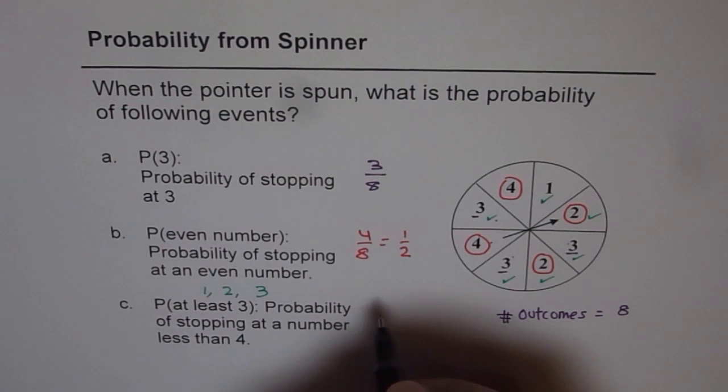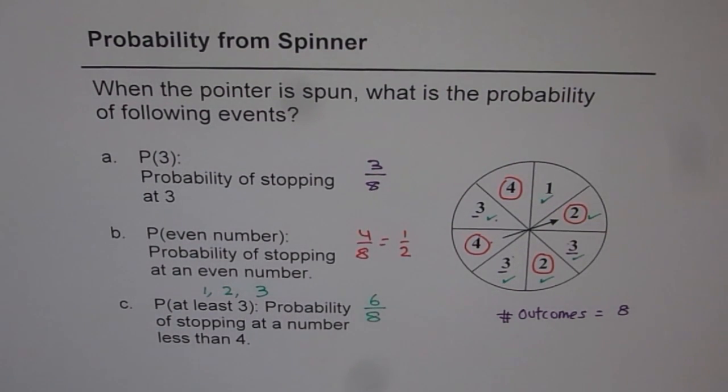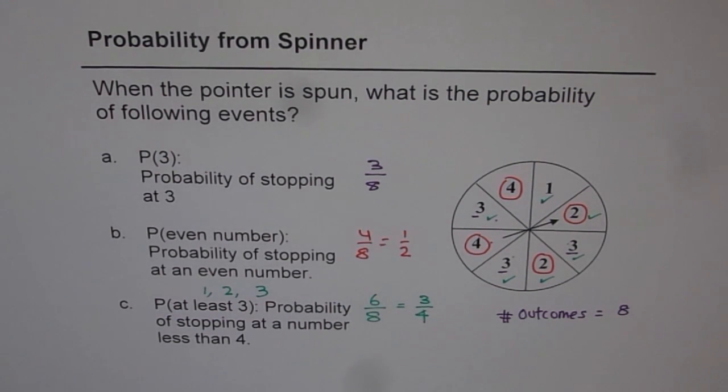6 out of 8. So we get 6 out of 8 as at least 3, which you could simplify dividing both by 2, you get 3 over 4. Or 75 percent.